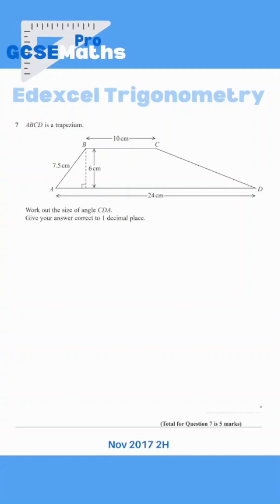So we've been asked to work out the size of angle CDA, which is this one here. However, we've only got information on the left hand side so far. I'm going to create another triangle by drawing a line down at C.